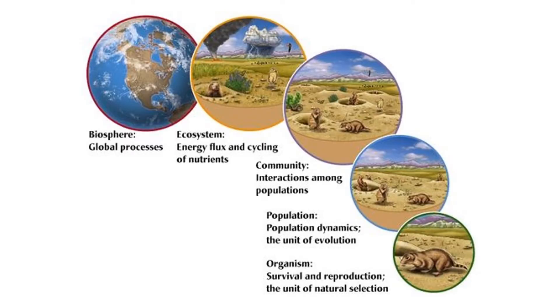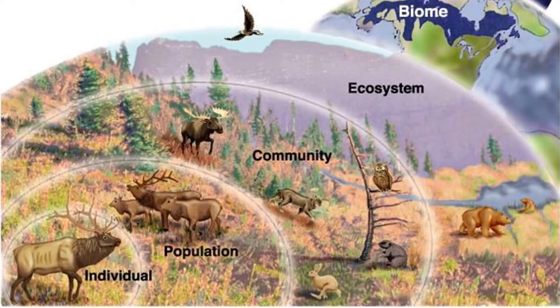There are many levels of organization on our planet. The highest level is the biosphere, which consists of all life on Earth. The smallest level is made up of individual organisms. The basic unit of evolution are populations — all of the individuals of a species who live in a specific location and are capable of reproducing with one another.